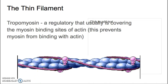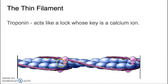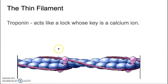Those conditions are troponin being unlocked with calcium. Troponin is along the tropomyosin strand, and it can be unlocked with a calcium ion. When calcium binds to the troponin, it changes the shape or orientation of the tropomyosin, revealing the myosin binding sites that are currently covered by tropomyosin.